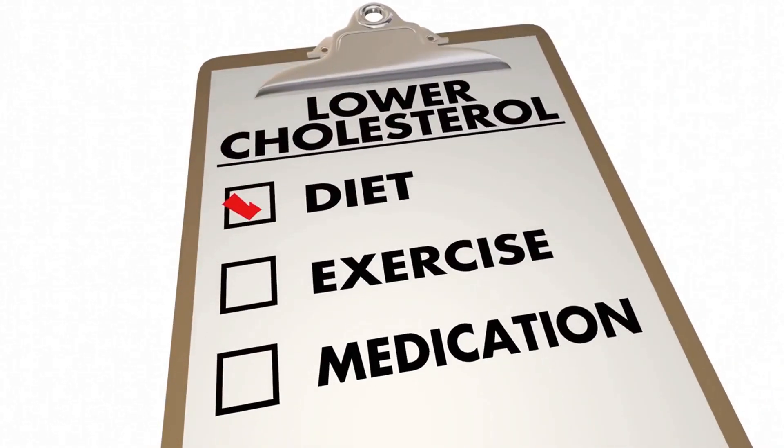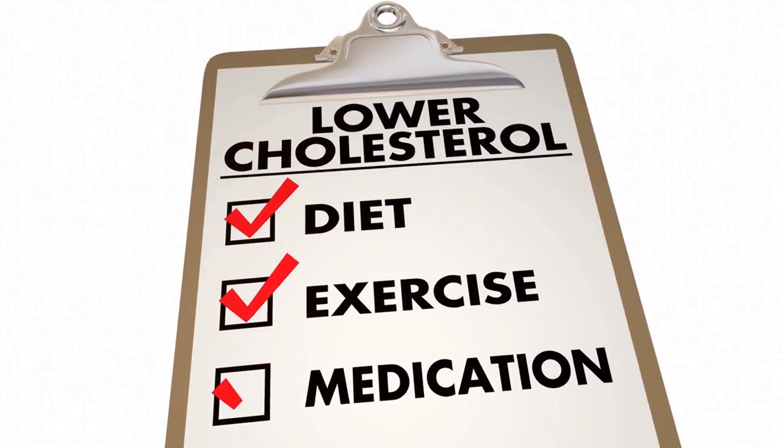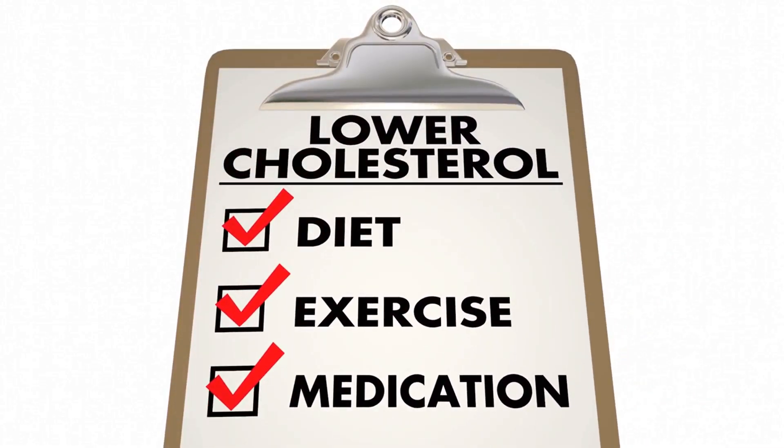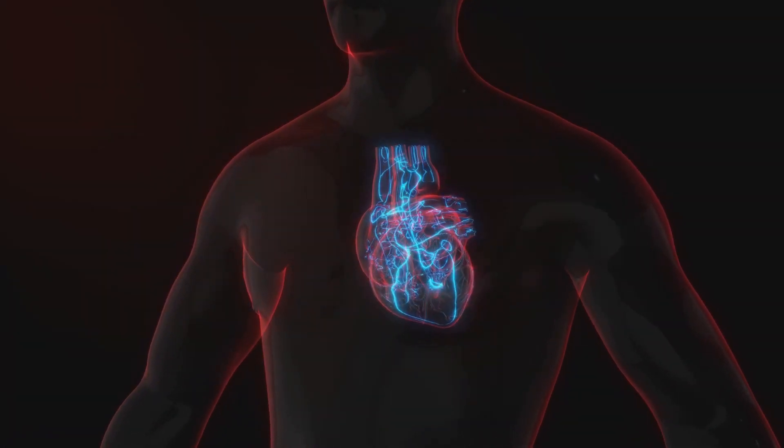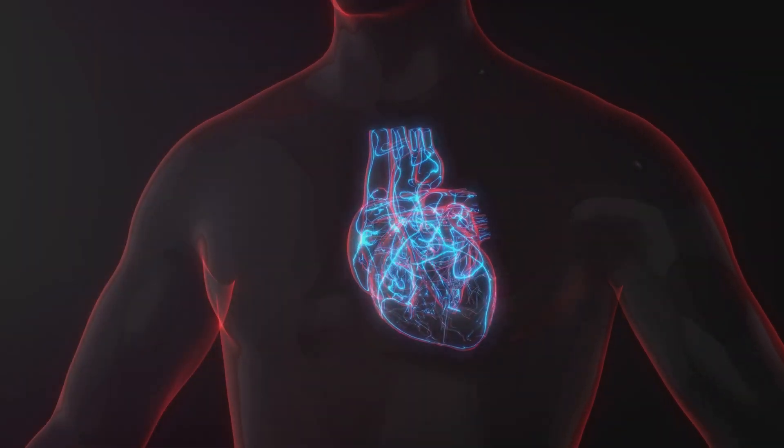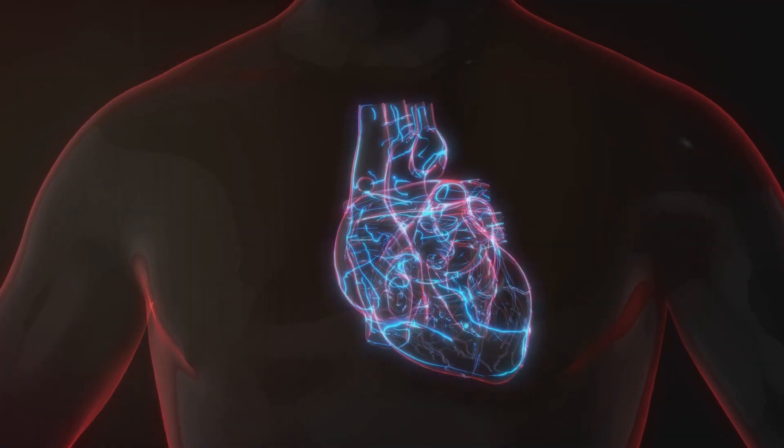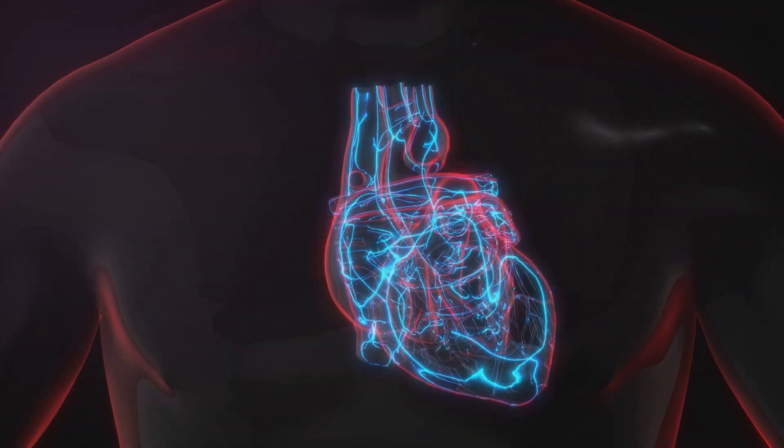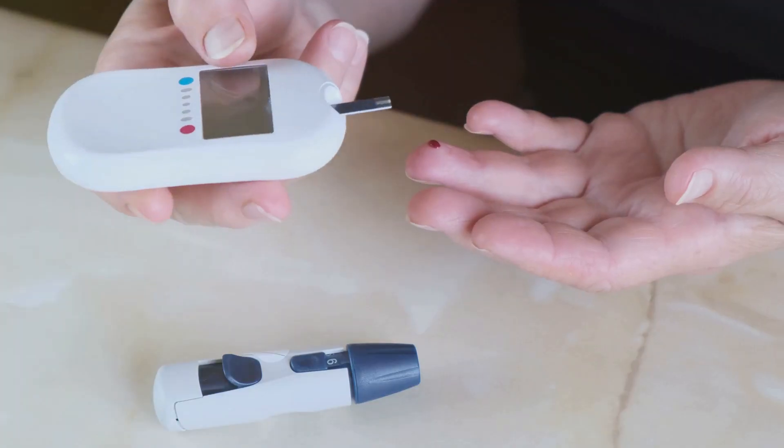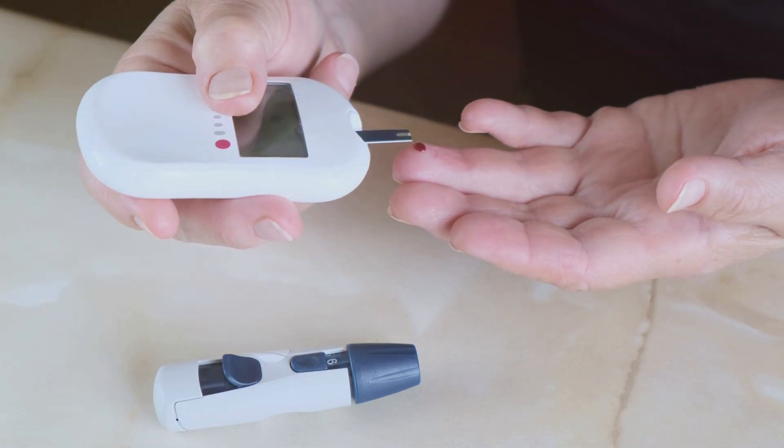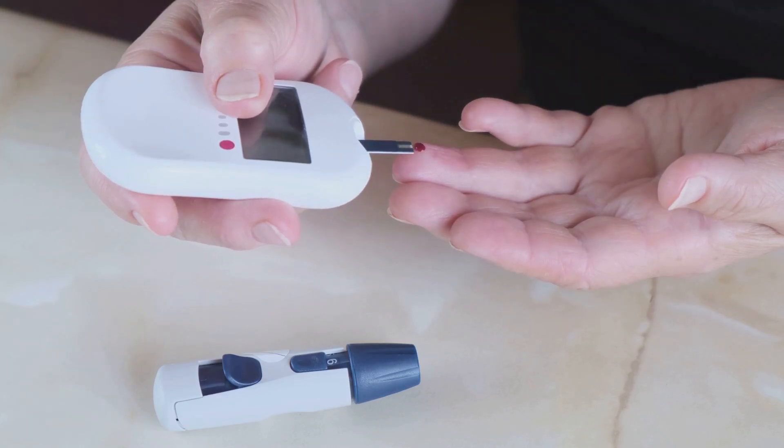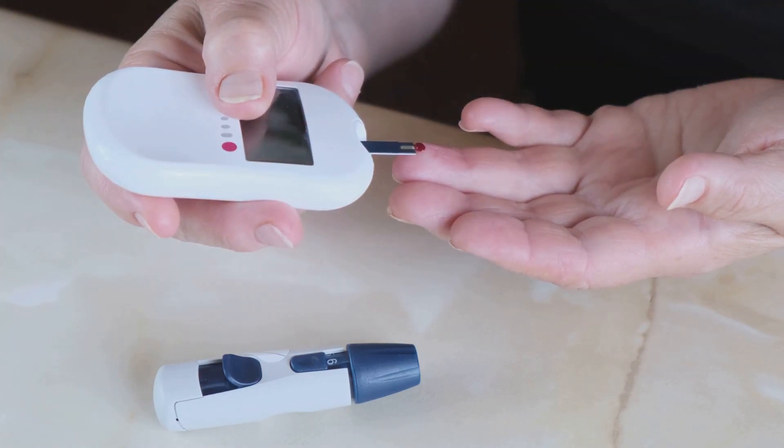Shifting gears, let's talk about the triglyceride to HDL ratio. This is another useful indicator of insulin resistance. This ratio can be obtained from a standard lipid panel, a common blood test. A higher ratio often suggests insulin resistance. The caveat here, however, is that it may not be as specific as other measures. But, it's still a valuable piece of the puzzle. To illustrate, consider Lisa's case, she had a triglyceride to HDL ratio of 5 to 1. After focusing on her metabolic health, her ratio improved to 3 to 1, indicating better insulin sensitivity.